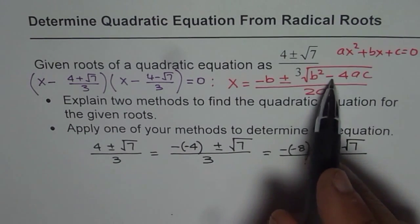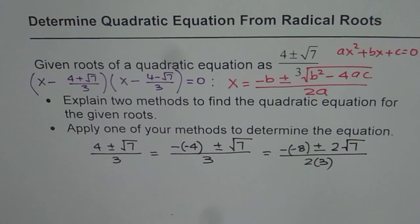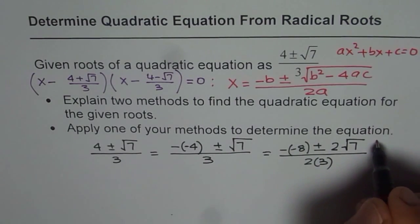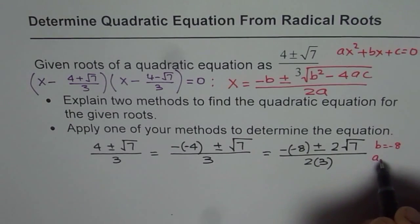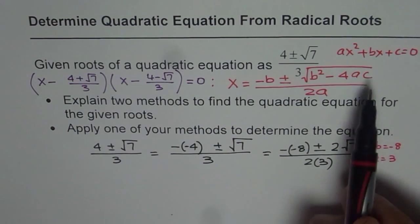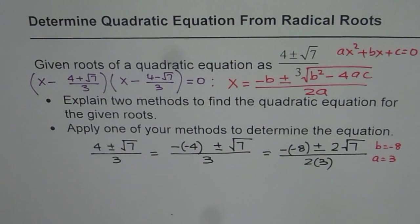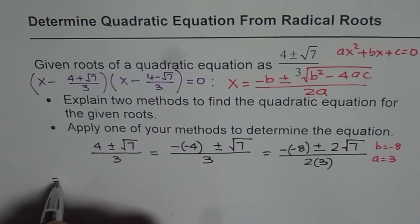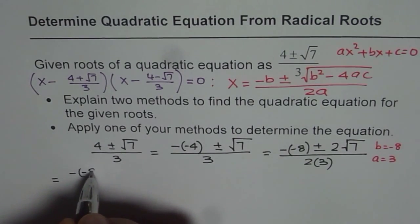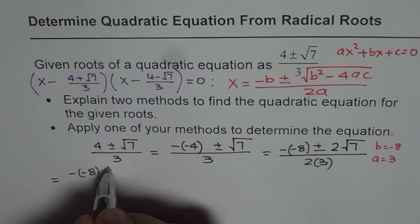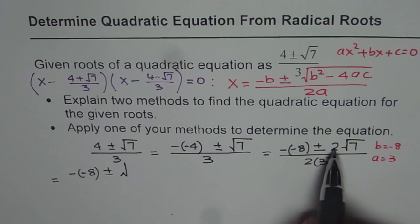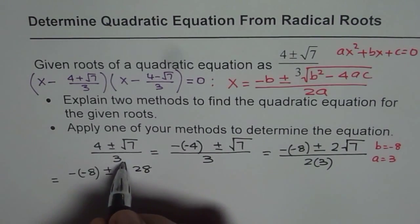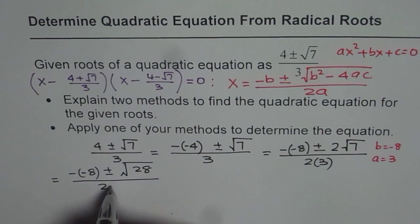Now how do I get b squared minus 4ac? I know b. Since I know b, I can write b equals minus 8 and I have a equals 3. Now the idea is to get c. So what we can do at this stage is rewrite this as minus of minus 8 plus or minus square root of... If I take 2 inside it should be 4. 4 times 7 is 28, divided by 2 times 3.